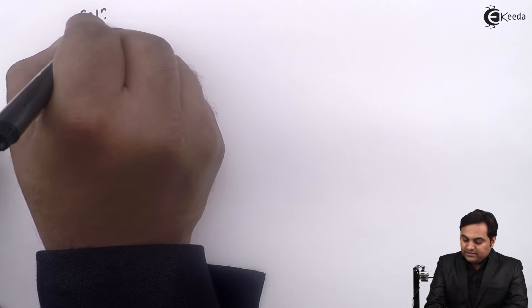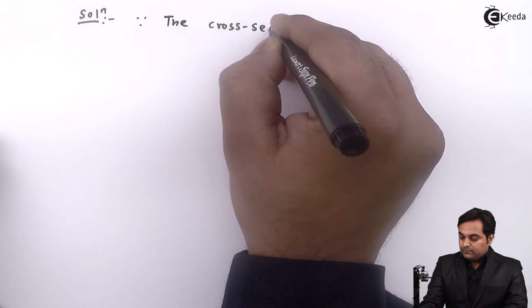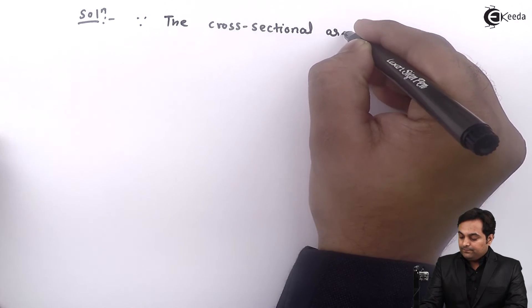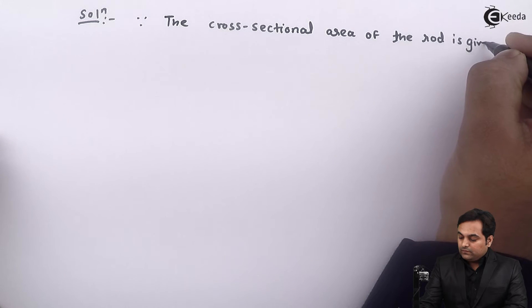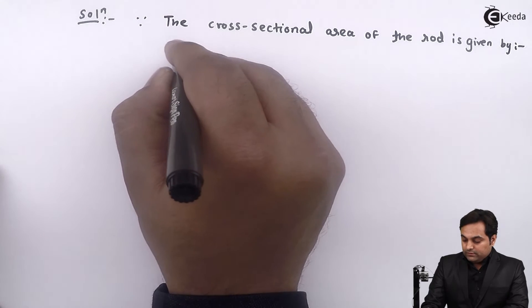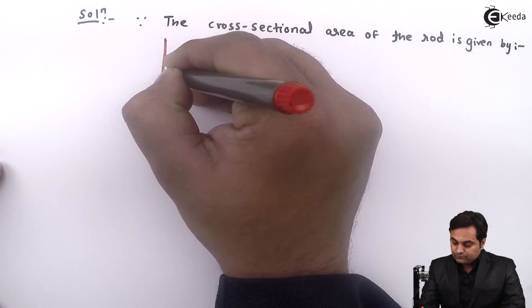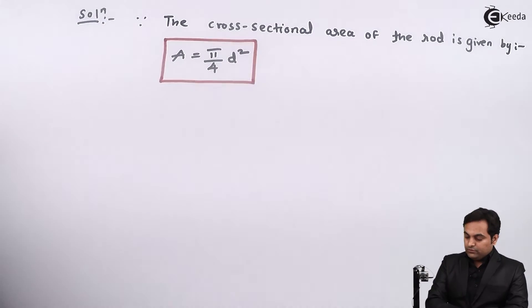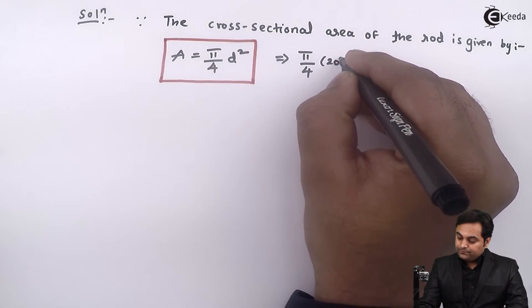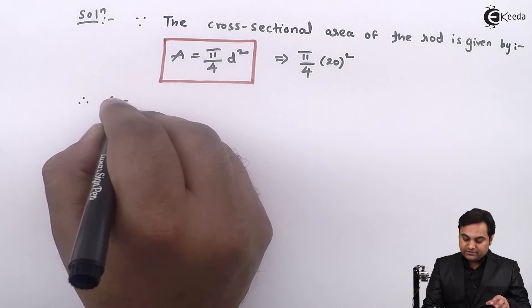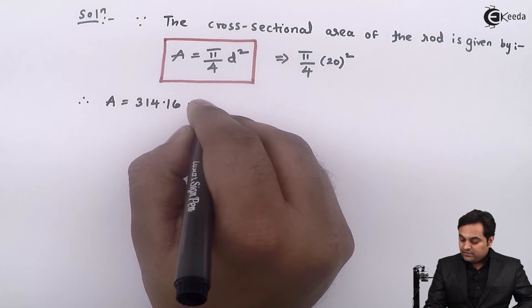In the solution part, I will say that first, since the cross sectional area of the rod is given by cross sectional area is circular, so it is pi by 4 d square. So here pi by 4 into diameter is given as 20. So area, this comes out to be 314.16 mm square.